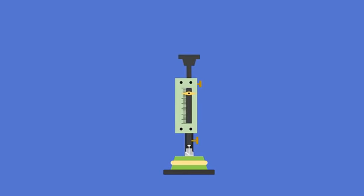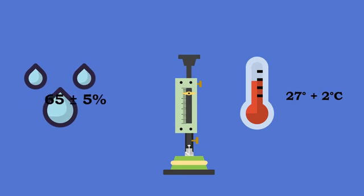The laboratory temperature at the time of gauging should be 27 ± 2 degrees Celsius and the relative humidity should be 65 ± 5%.